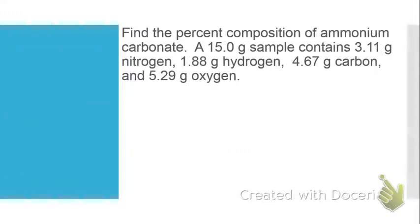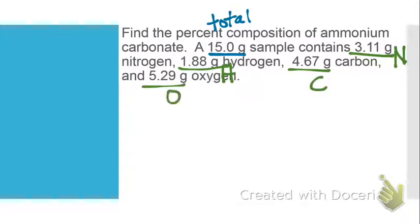In that first problem, find the percent composition of ammonium carbonate. A 15 gram sample contains 3.11 g nitrogen, 1.88 g hydrogen, 4.67 g carbon, and 5.29 g oxygen. We should notice that we have this 15 gram sample - that is our total sample and the total mass of that sample. So this is technically that second equation. We're going to take the mass of each element divided by the total mass of the sample. It doesn't specify just nitrogen or hydrogen, it just says find the percent composition, so that means it wants all of them.